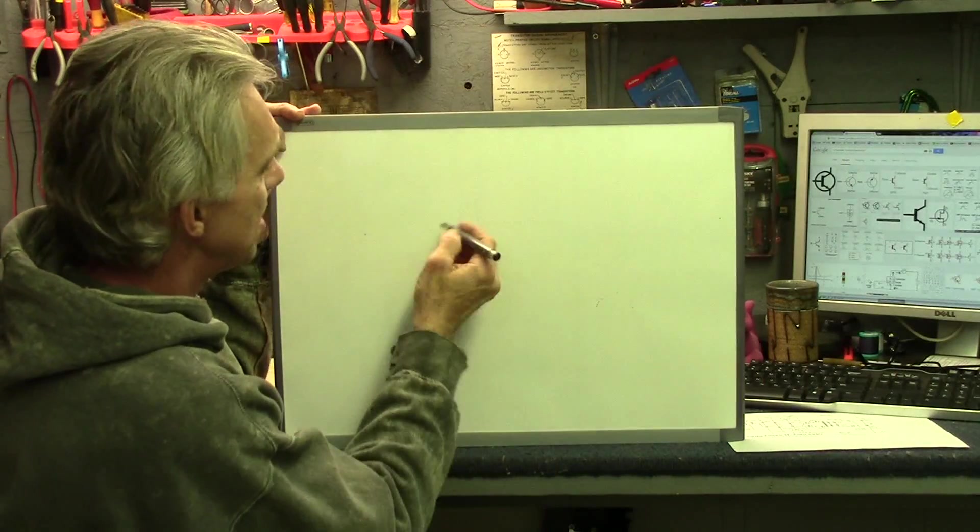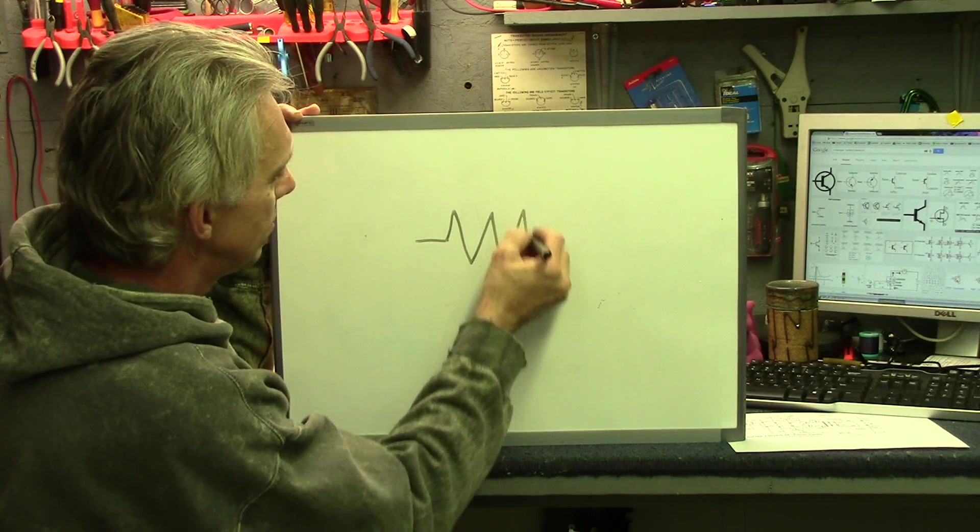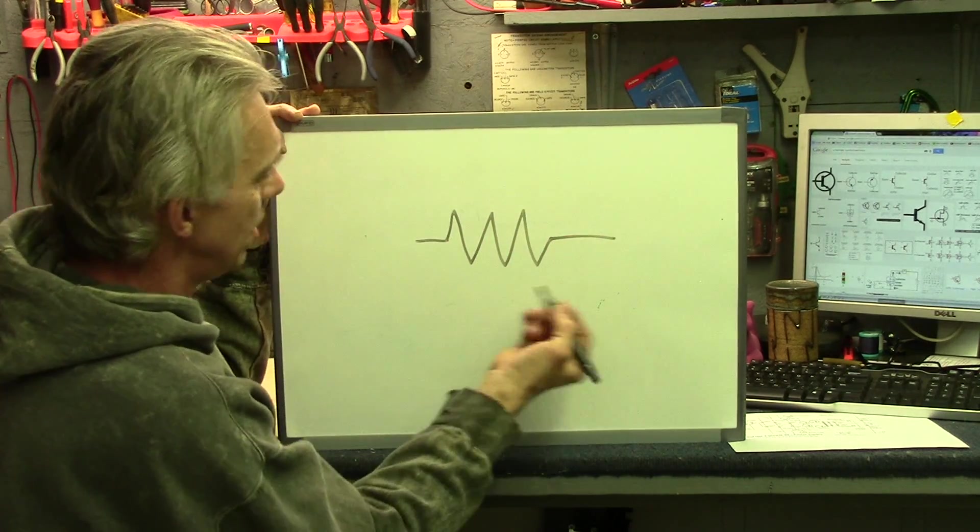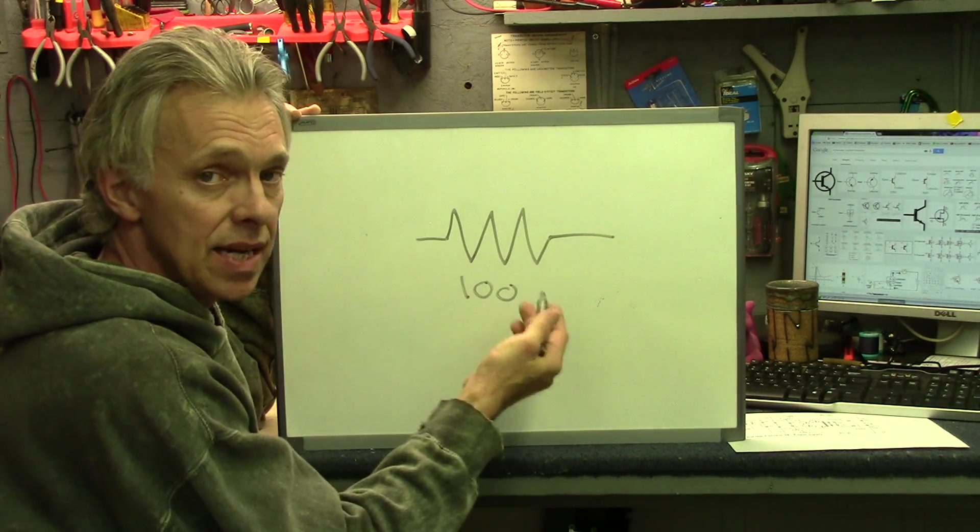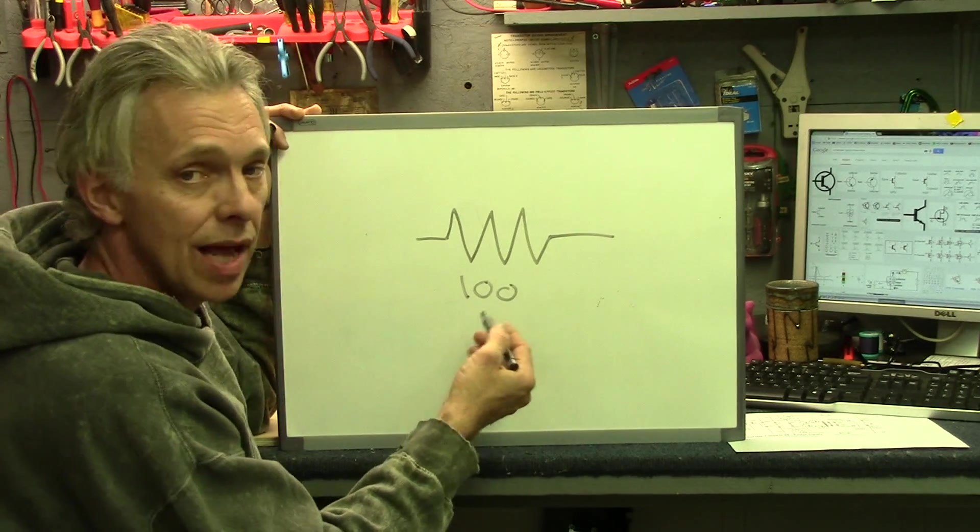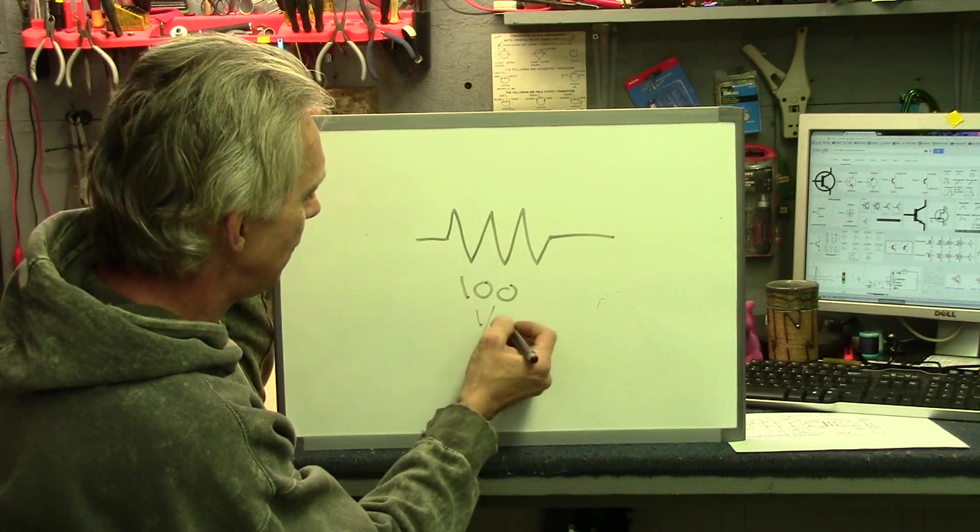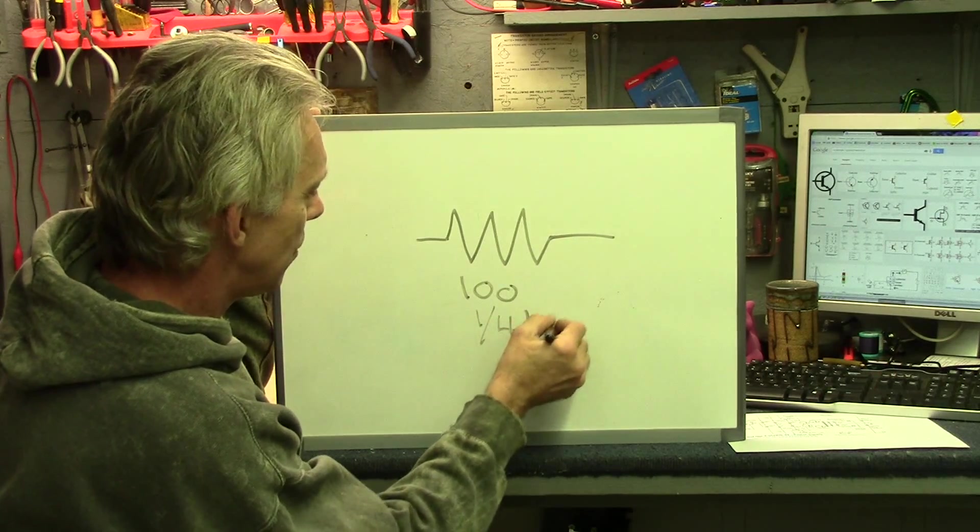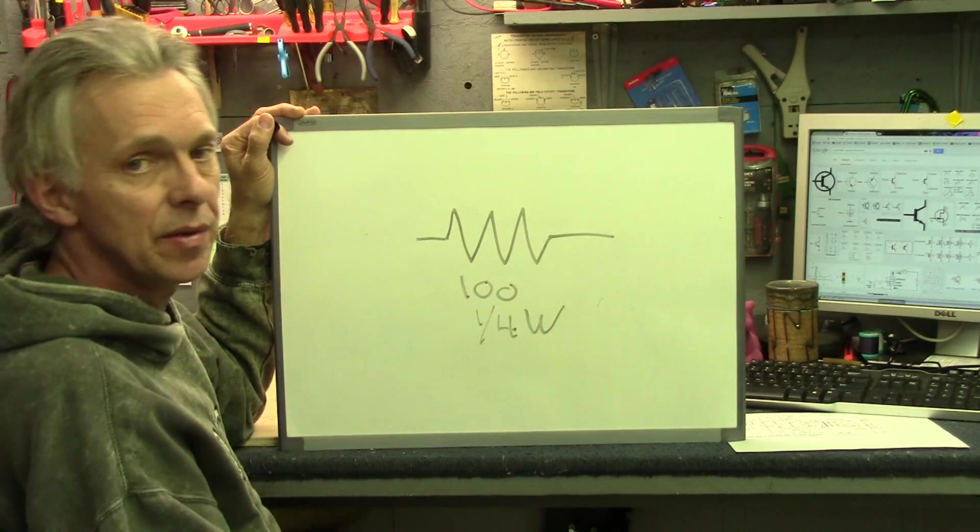Another thing you'll see on a resistor symbol is the watt rating. So you may have a resistor here and it might say one hundred. If you don't see anything after it, that would mean it's a hundred ohms. And then it will have a watt rating. And that watt rating may be one fourth with a W, it could be one half, it could be one. But it will have a W next to it.